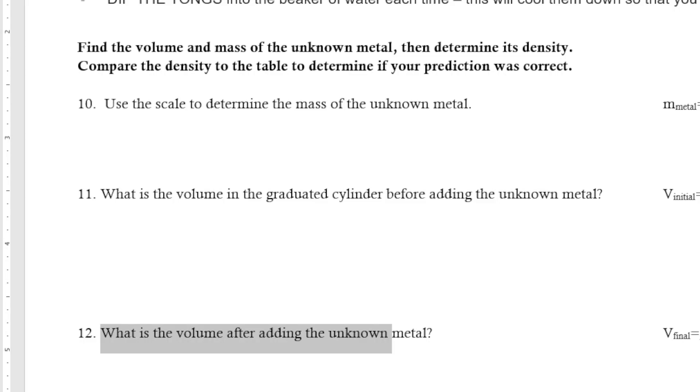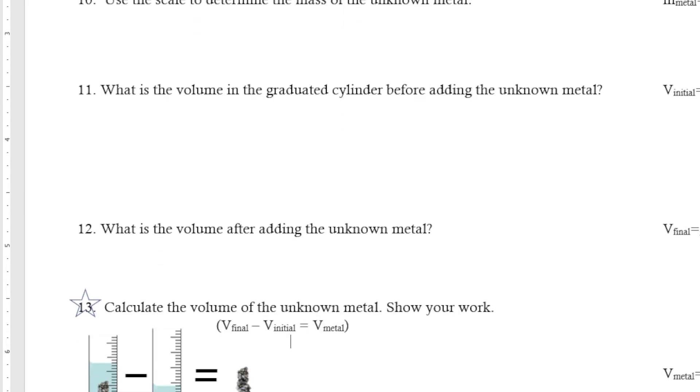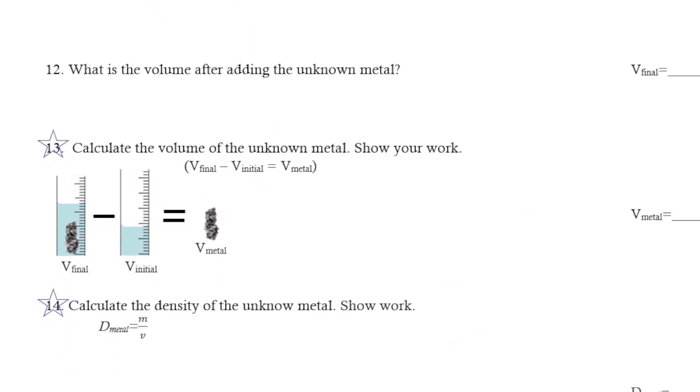For number 13, you're going to calculate again just like we did on the front page. You're going to take your final volume of 54.1, subtract our initial volume of 52.4, and that gives you the volume of just the metal. That's going to be the answer that you put on the line for number 13.